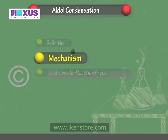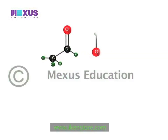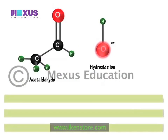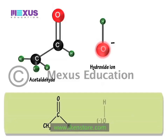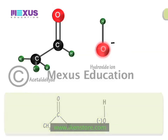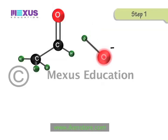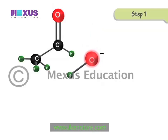Let's closely look at the reaction mechanism by studying the reaction between acetaldehyde and the hydroxide ion. In step 1, the hydroxide ion abstracts an alpha hydrogen from the acetaldehyde molecule, which results in a carbanion and a water molecule.